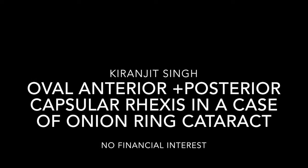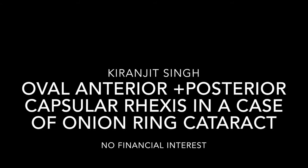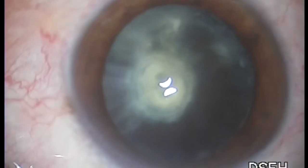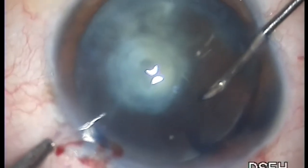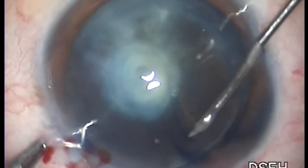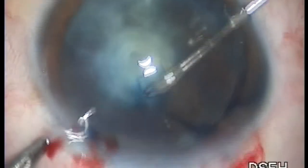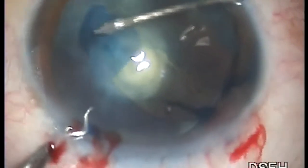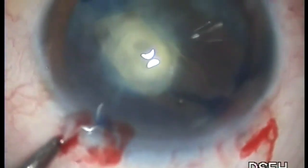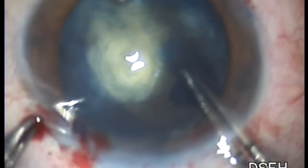Oval anterior and posterior capsular rexes in a case of onion ring cataract. An oval capsulotomy is being done after staining the anterior capsule. The result is a beautiful oval capsular axis.